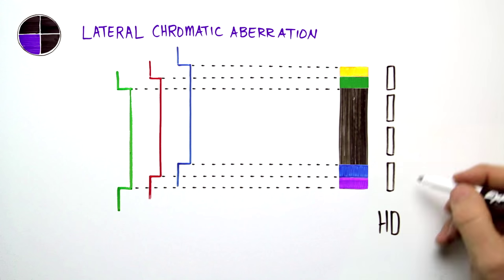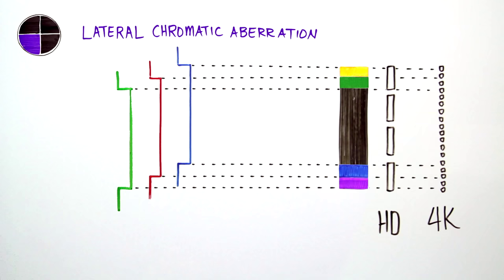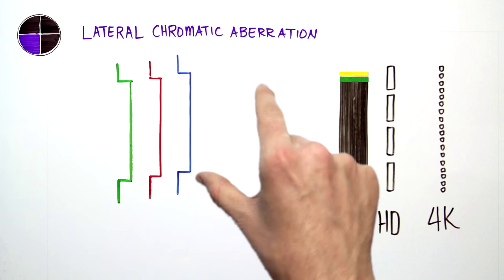4K sensors make this color fringing more visible, so Canon uses highly advanced design technologies to bring the wavelengths back into line.